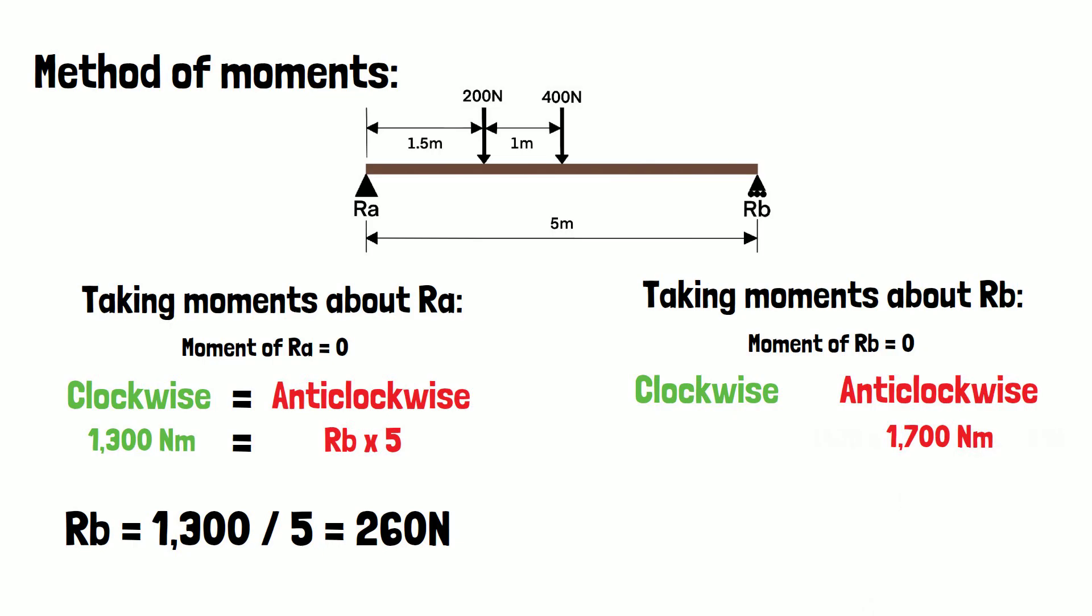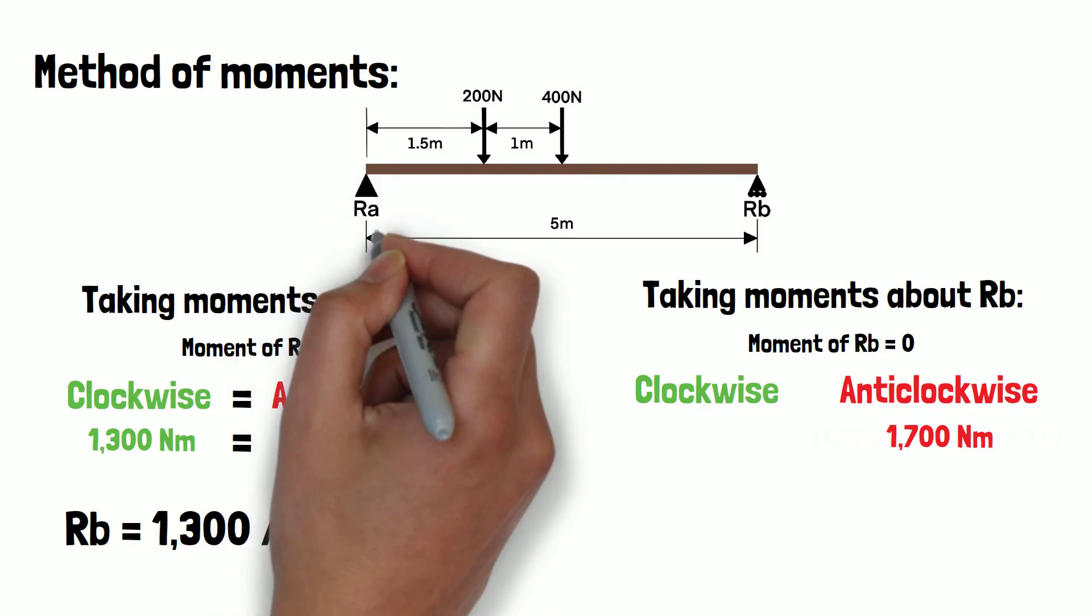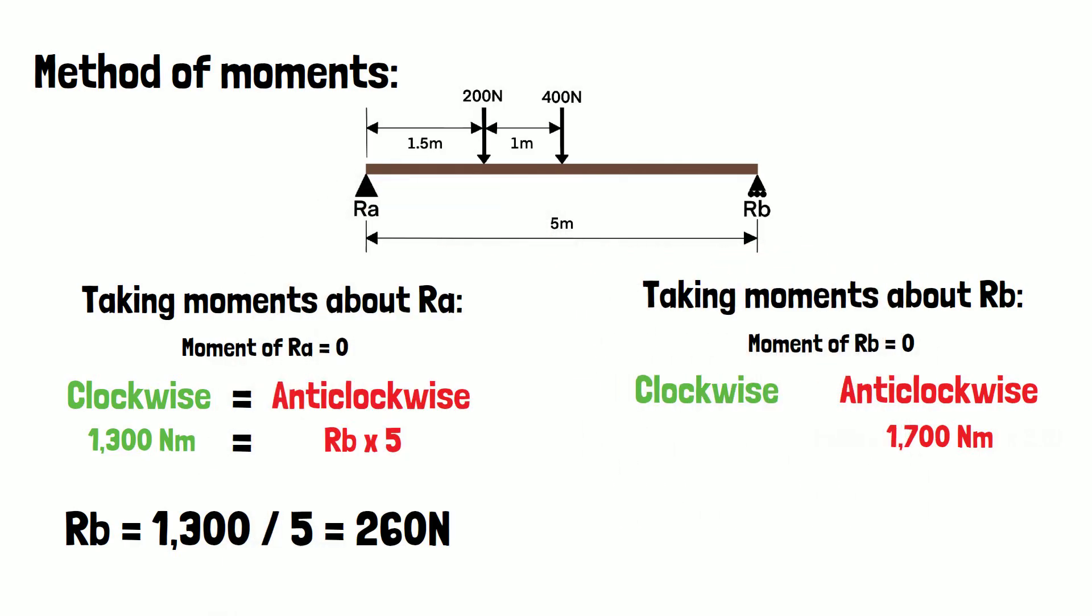In the clockwise direction, the only moment we have is the support reaction RA at a distance of 5 meters. Since the beam is in equilibrium, the clockwise moments must be equal to the anticlockwise moments, and we can again transpose this equation to find RA by dividing 1700 by 5, which gives us 340N.